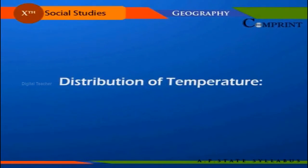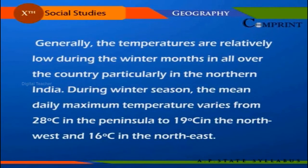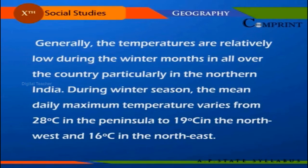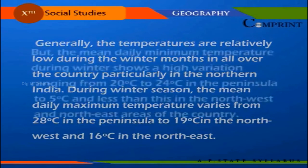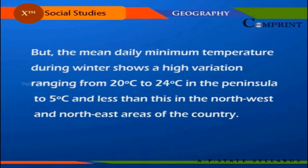Distribution of temperature: Generally, temperatures are relatively low during the winter months all over the country, particularly in northern India. During the winter season, the mean daily maximum temperature varies from 28 degrees Celsius in the peninsula to 19 degrees Celsius in the northwest and 16 degrees Celsius in the northeast. However, the mean daily minimum temperature during winter shows a high variation, ranging from 20 to 24 degrees Celsius in the peninsula and 5 degrees Celsius or less in the northwest and northeast areas.